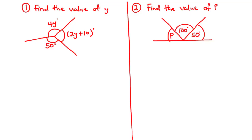We are going to continue our lesson on plane geometry 1 as we solve a couple of examples. Now let's start off with example 1: find the value of y. In this figure, we have three lines meeting at a point. At the point of intersection, three angles are formed. The sum of these angles around the point is equal to 360 degrees. We are going to add all these angles up and equate that to 360 degrees so that we can find the value of y.